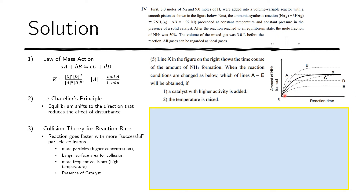For question five, line x is the given curve showing ammonia formation over time. The x-axis is reaction time and the y-axis is the amount of ammonia formed. After some time, the amount of ammonia stops changing — that is when equilibrium is reached. We are asked: what if we add a catalyst with higher activity? A catalyst increases the rate of reaction, meaning we achieve the flattening faster. So the bend toward equilibrium comes earlier than in line x — that could be line A or line D.